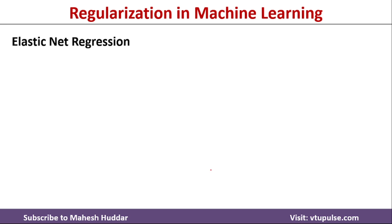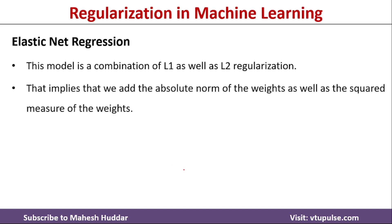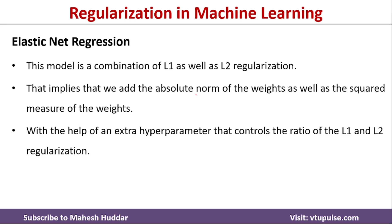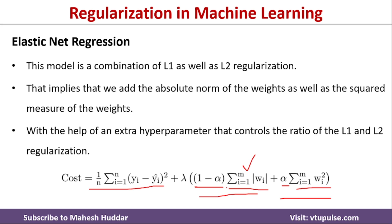Elastic net regression is the combination of both L1 and L2 regularization. The two are added proportionately using a hyperparameter alpha. The cost function adds the absolute weight term multiplied by alpha and the squared magnitude term multiplied by (1 minus alpha). Alpha can be any value in the range of 0 to 1. If alpha equals 0, it becomes lasso regression; if alpha equals 1, it becomes ridge regression; and any value in between gives elastic net regression.